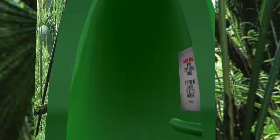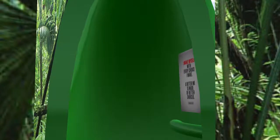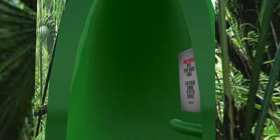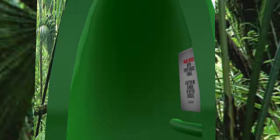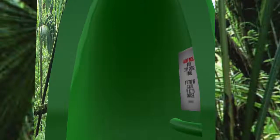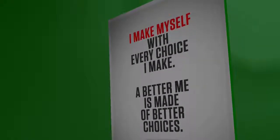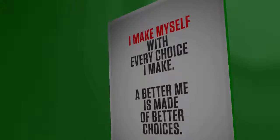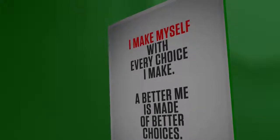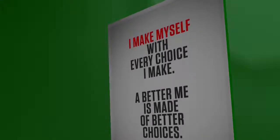Passing under the final arch, it's time to proceed to the cocoon. Once again, it's a revolving door that emphasizes the transformational process of metamorphosis. It also has a sign that says, I make myself with every choice I make. A better me is made of better choices, which is the theme of the next stage.